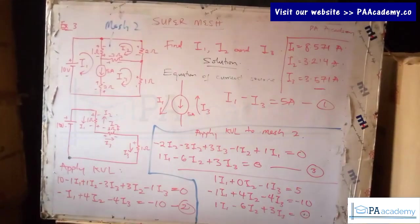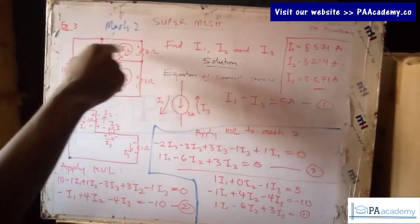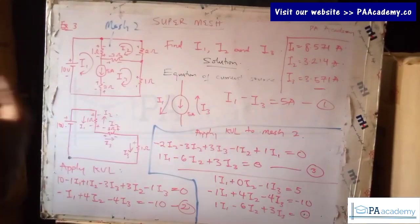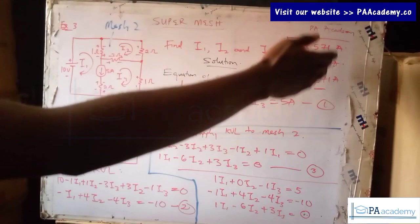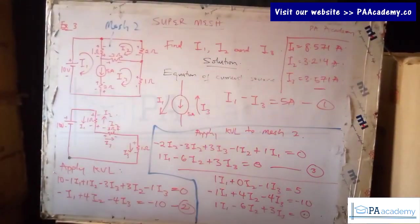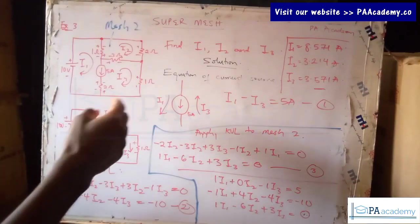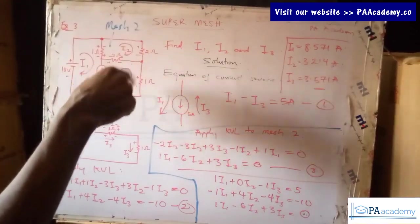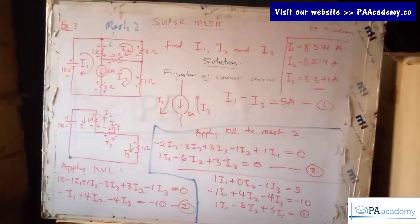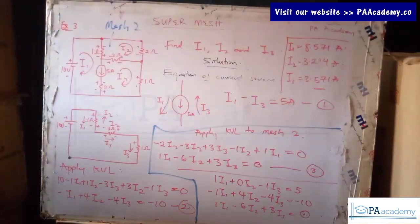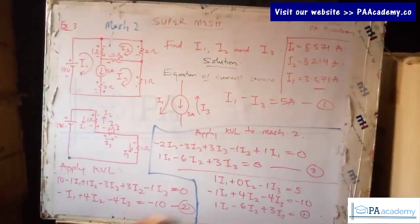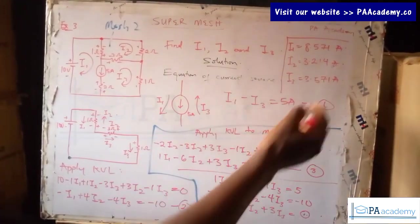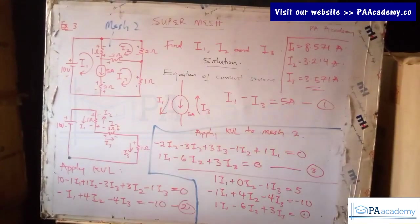These are the values of i1, i2, and i3 — the currents flowing in each of those meshes based on the direction we chose. Since all the answers are positive, it tells us that all the directions we assumed — clockwise — are actually the real directions the currents are flowing. This is consistent with what we covered in the mesh analysis video. That's it for example three.